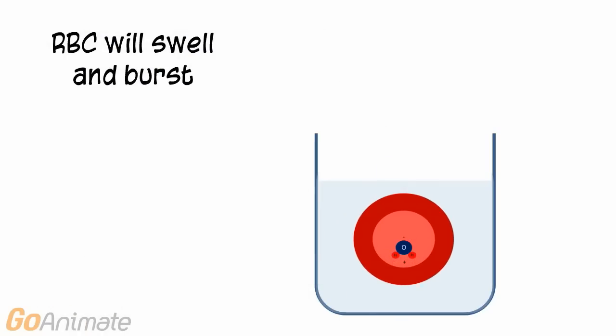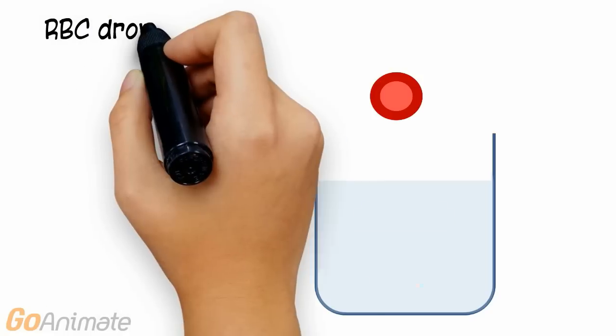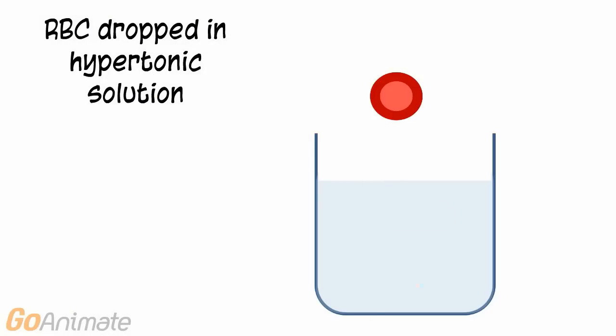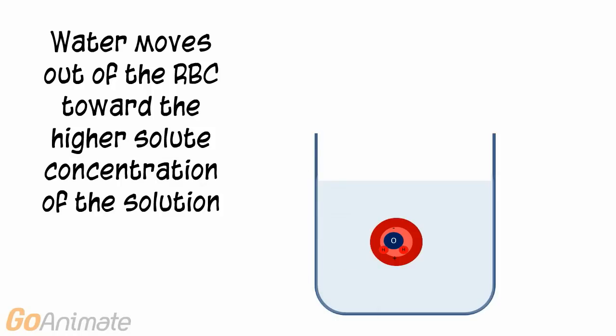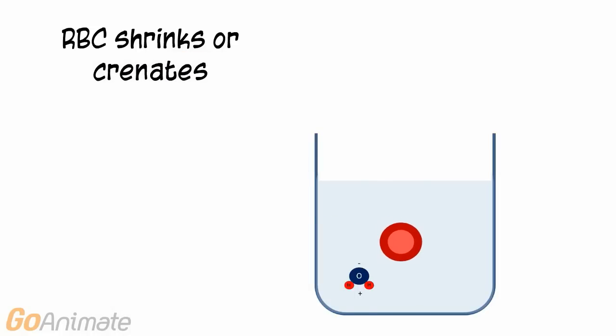Likewise, if a red blood cell is dropped into a hypertonic solution, water will flow out of the cell causing it to shrink or crenate. Water again flows toward the higher concentration of solute, which this time is outside of the cell.